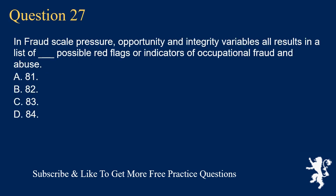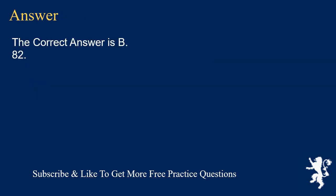Question 27: In fraud scale, pressure, opportunity, and integrity variables all result in a list of underscore possible red flags or indicators of occupational fraud and abuse. A. 81. B. 82. C. 83. D. 84. The correct answer is B. 82.